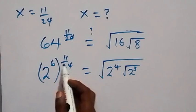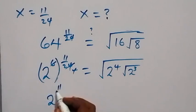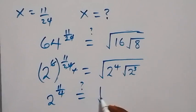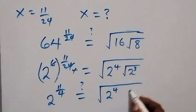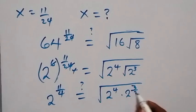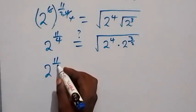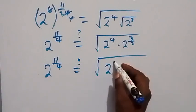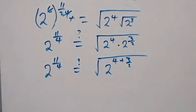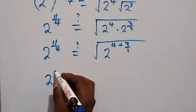We have 2 raised to power 3 over 2. We can write 2 raised to power 4 and this square root as raised to power one-half, times 2 raised to power 3 over 2. Since we have the same base we can add the powers, giving 2 raised to power 11 over 4 equals square root of 2 raised to power 4 plus 3 over 2. That is 8 plus 3, which is 11 over 2, so we have 2 raised to power 11 over 4 equals square root of 2 raised to power 11 over 2.